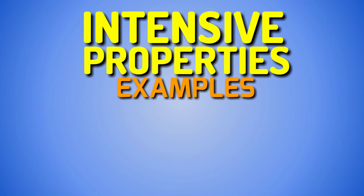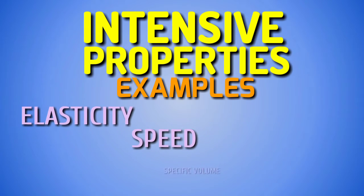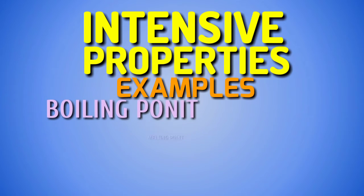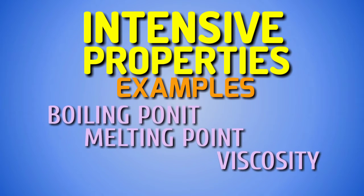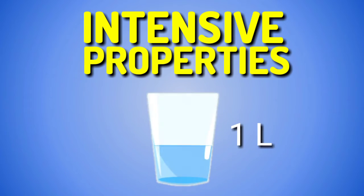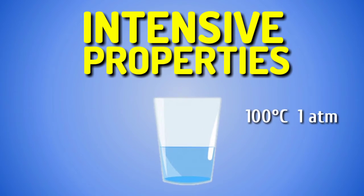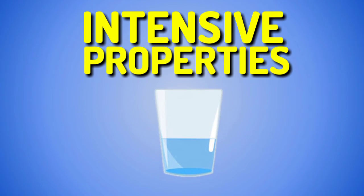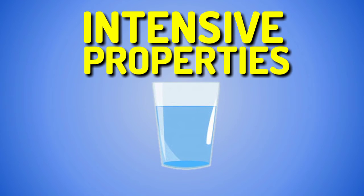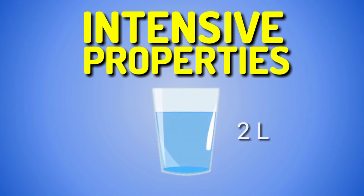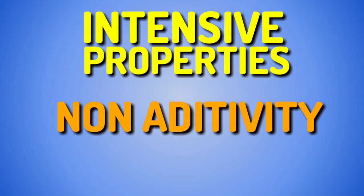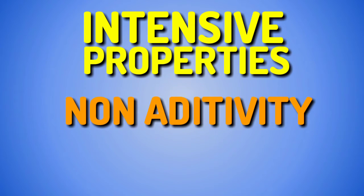Some examples of intensive properties are elasticity, speed, specific volume, density, boiling point, melting point, viscosity, among others. If you have a liter of water, its boiling point is 100 degrees Celsius considering that it is at atmospheric pressure. If another liter of water is added, the new system consisting of two liters of water has the same boiling point as the original system. This illustrates the non-additivity of intensive properties.